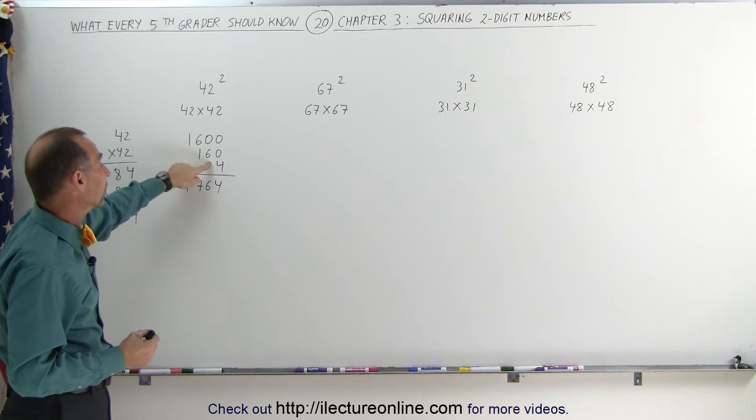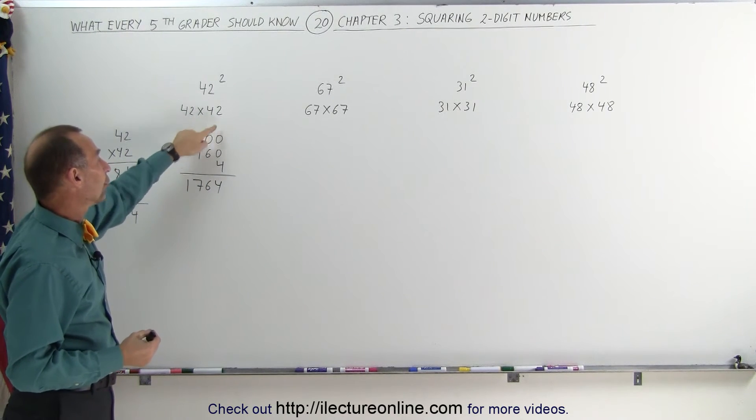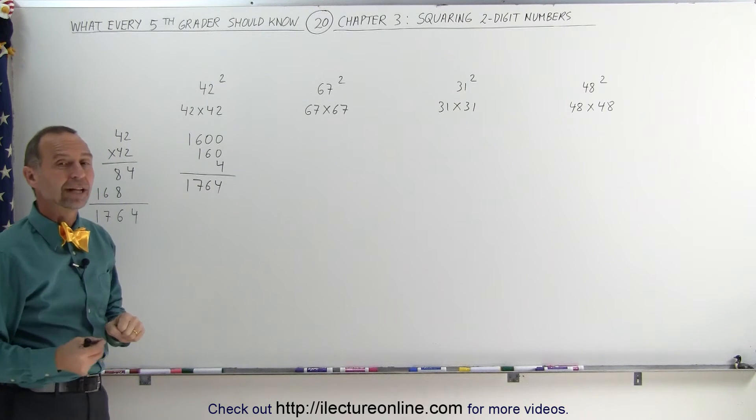Add 160 to the previous number you remembered, 1600, that's 1760. And then you go 2 times 2, which is 4. Add 4 more, you get 1764.